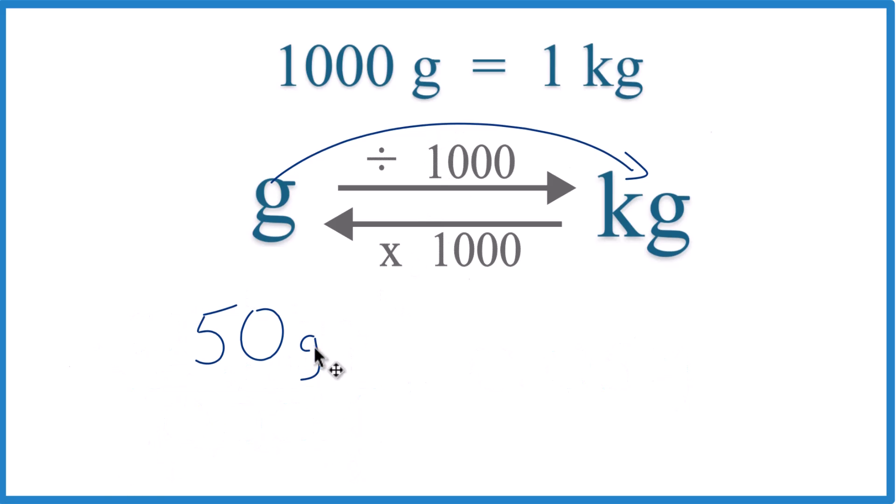We have our 50 grams. So we have grams on the top. We're going to need grams on the bottom in our conversion factor. So we're going to multiply by the conversion factor.